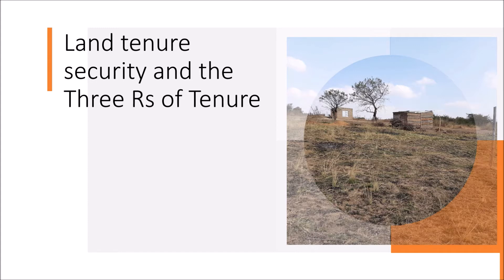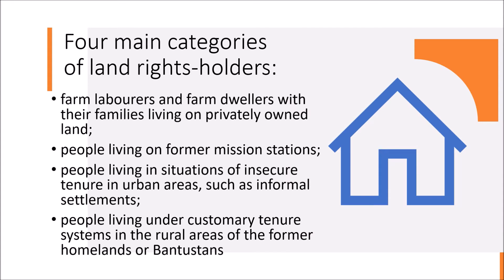Without security of tenure, customary land rights holders are easily displaced by powerful elites. In South Africa, due to the influence of colonialism and apartheid, weak tenure security is associated with four main categories of land rights holders: farm laborers and farm dwellers with their families living on privately owned land; people living on former mission stations; people living in situations of insecure tenure in urban areas such as informal settlements; and people living under customary tenure systems in rural areas of the former homelands.